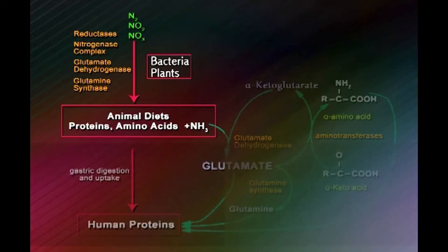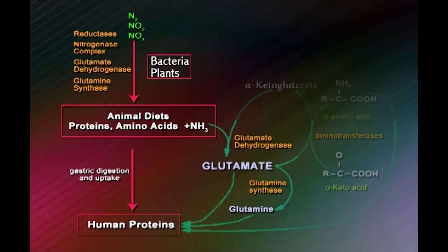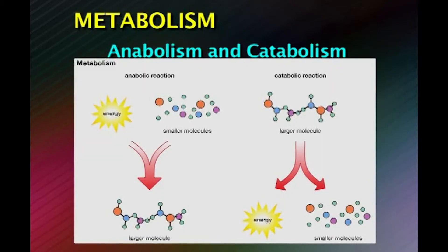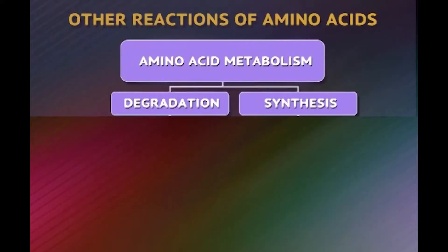Either nitrogen N2 or nitrate and nitrite NO2 and NO3 are reduced by a number of enzymes like the reductases, the nitrogenase complexes, glutamate dehydrogenase, and glutamine synthase, all of which incorporate nitrogen into animal diets in the form of proteins comprised of amino acids. When consumed by humans, these are taken up by gastric digestion, and the liberated ammonia is incorporated into glutamate which is converted into glutamine. These amino acids are incorporated into human proteins for human nutrition. Metabolism means anabolism and catabolism, which means synthesis and degradation.